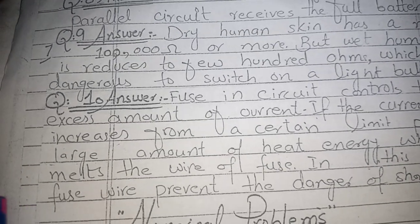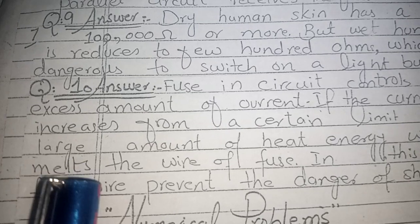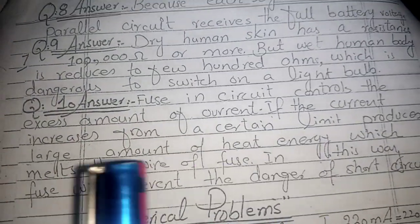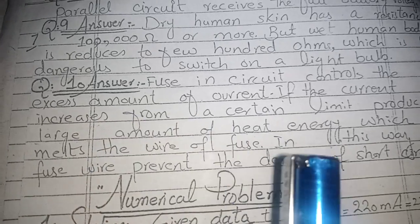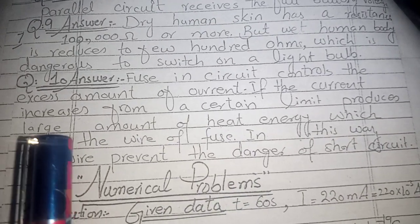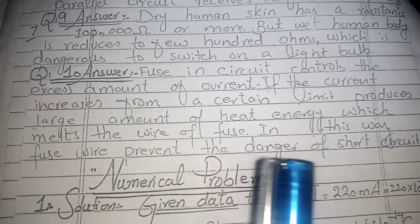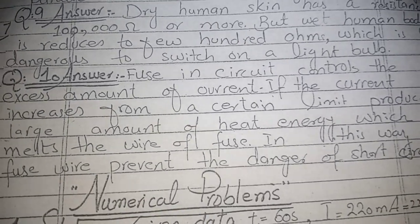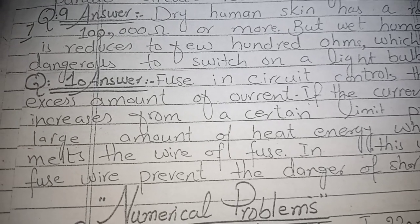Question 10: How does a fuse wire prevent the danger of a short circuit? A fuse wire controls the excess amount of current by allowing only up to a specific current limit to flow. If the current increases beyond that specific limit, the fuse wire will melt, making the circuit incomplete and stopping the current flow. This is how a fuse helps reduce the danger of a short circuit.